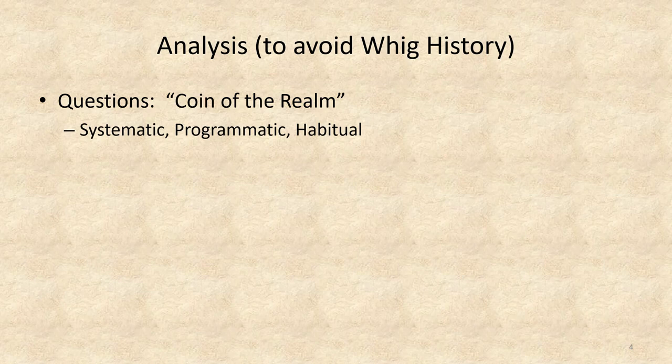System, program, and habit are things to aspire to, but they are not naturally occurring. Sure, you might be naturally curious, but to develop the habit of asking questions systematically and programmatically — that's a learned skill. One of the first steps of becoming a historian and of developing critical thinking is to develop the habit of picking things apart deliberately and asking questions of them.